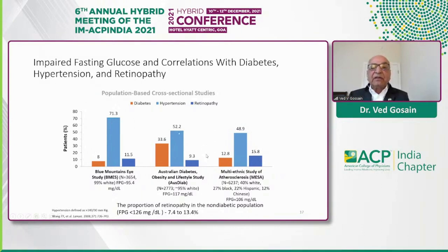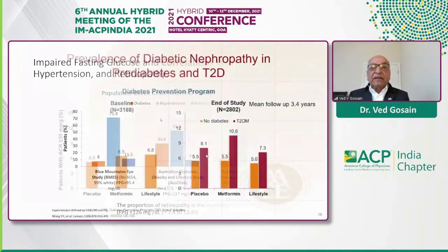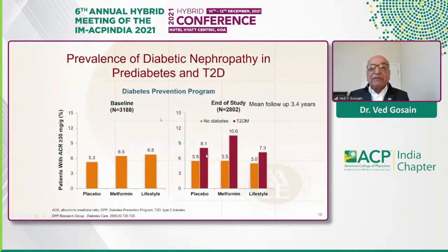In the Diabetes Prevention Program, at onset, 5 to 7% of patients had retinopathy already, and it increased as they developed diabetes.